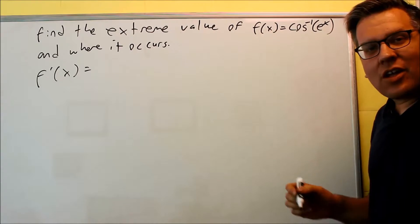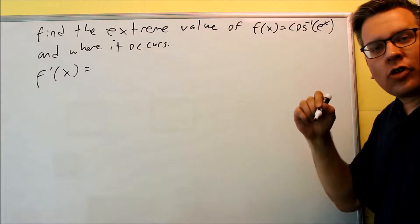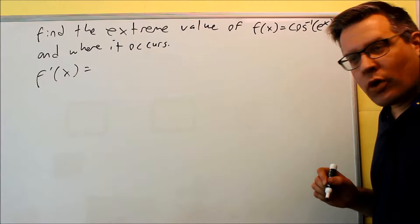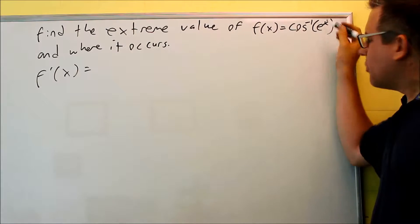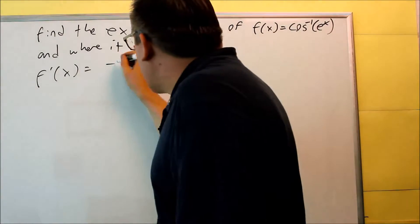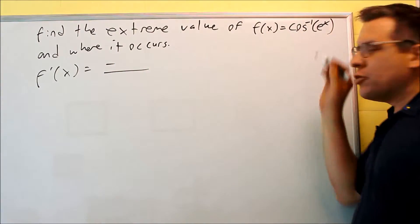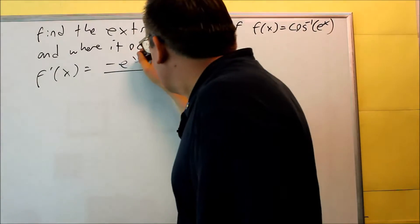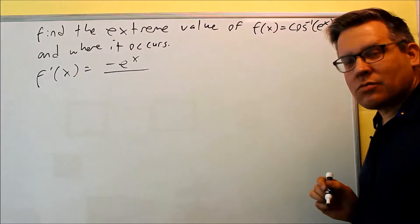The formula for that is negative u prime over the square root of 1 minus u squared. The u in this case is going to be e to the x. So let's apply that formula. We have a negative on top. The derivative of e to the x is itself, so we get negative e to the x.